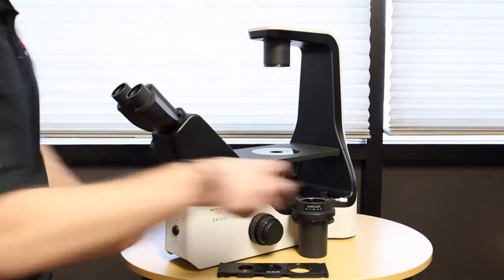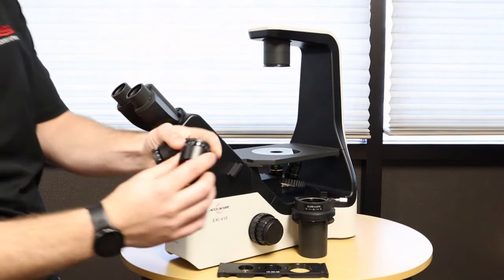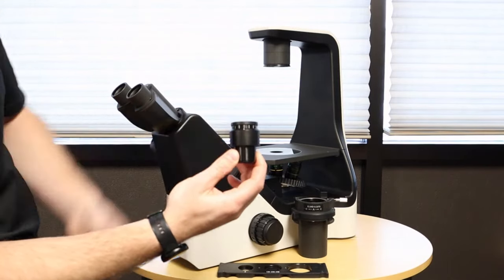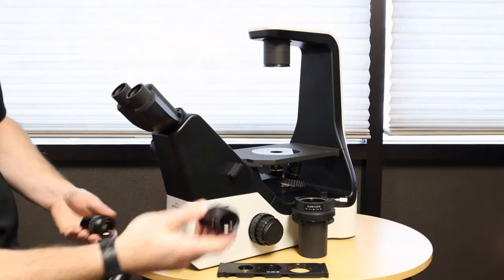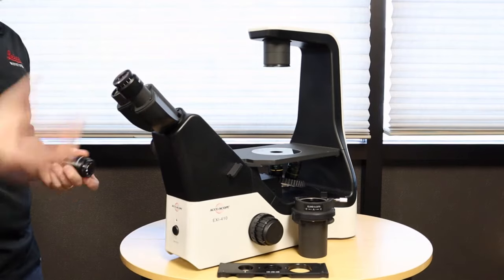Next we are going to install the eyepieces. It comes with two eyepieces, they are both focusing. So the first thing you want to know is make sure that you line the zero mark up with the dot, and very simply they get installed into the eye tubes.